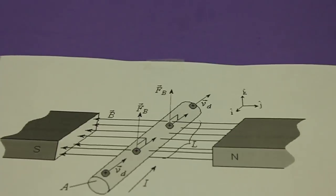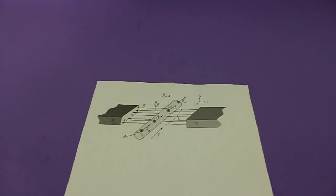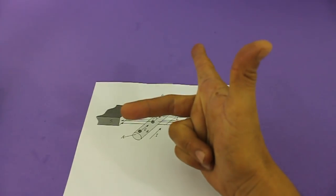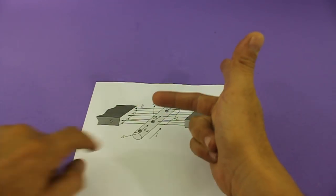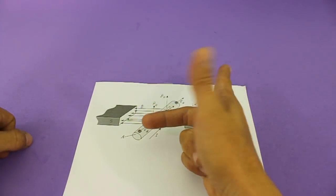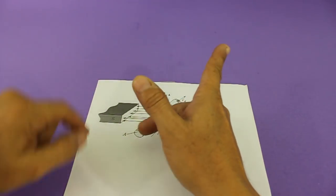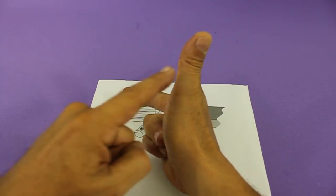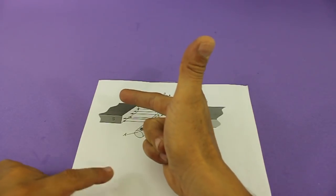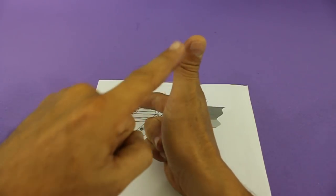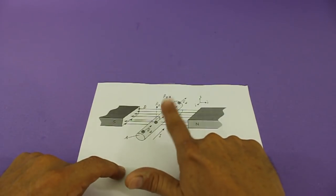The direction of the force can be found using the right hand rule. If we put our right hand like this, this finger points in the direction of the magnetic field and this in the direction of the electric current. So your thumb will indicate the direction of the force acting on the conductor. In this case, the force points upwards.